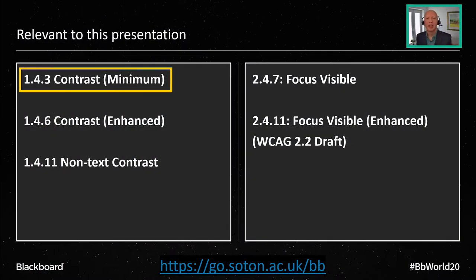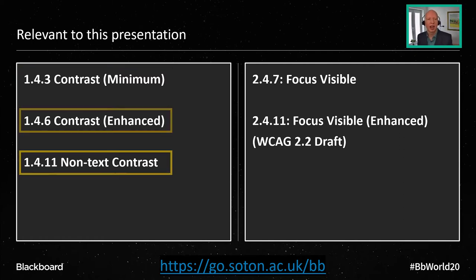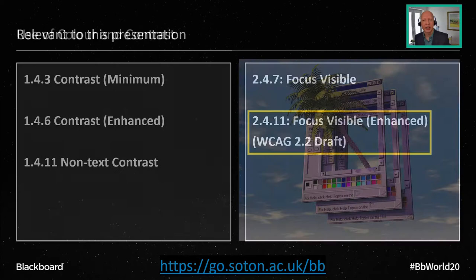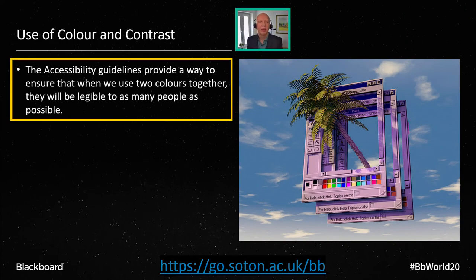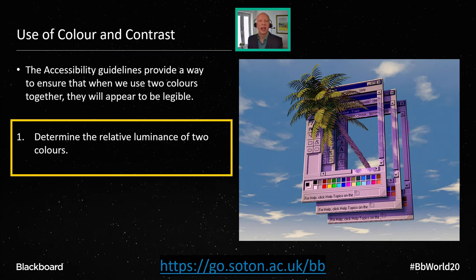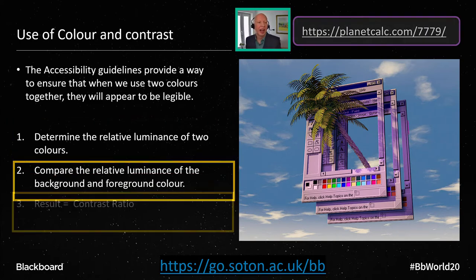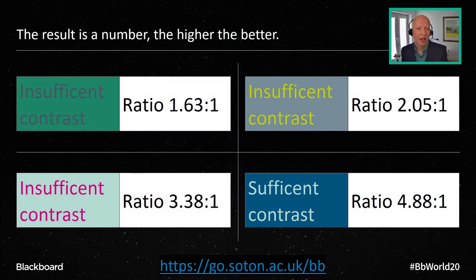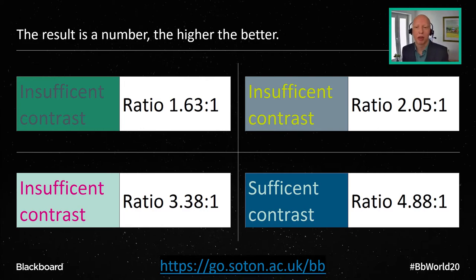Looking at colour and contrast, the guidelines provide a way to tell when we use two colours together how legible they will be. We determine the relative luminance of two colours and compare them — the result is a contrast ratio. The lower the number, the worse it is; the higher the number, the better. As you can see in these examples, the higher the contrast ratio, the more likely we are to be able to distinguish what we're trying to show.